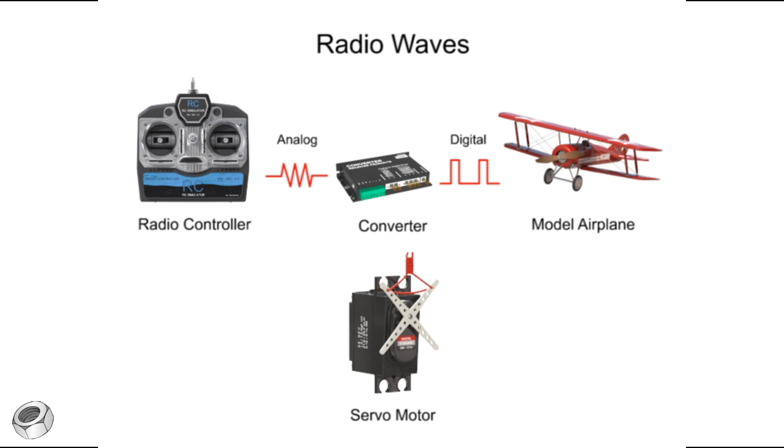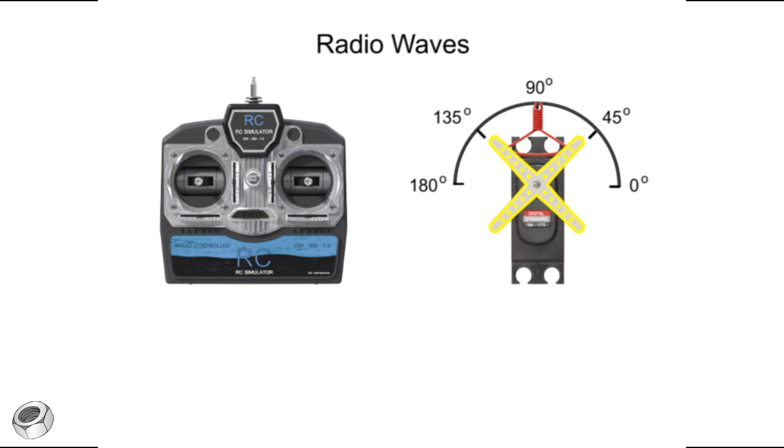Let's look at the operation of a servo motor in more detail. The horn of a servo motor can be activated to hold certain positions. This position is set by the length of a radio pulse arriving from the radio controller.